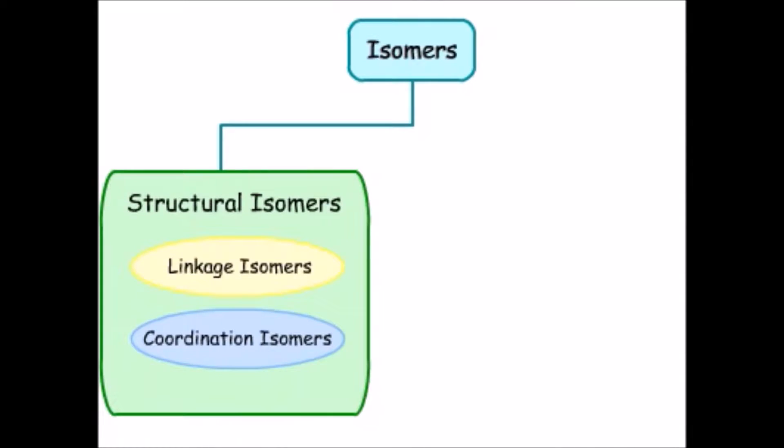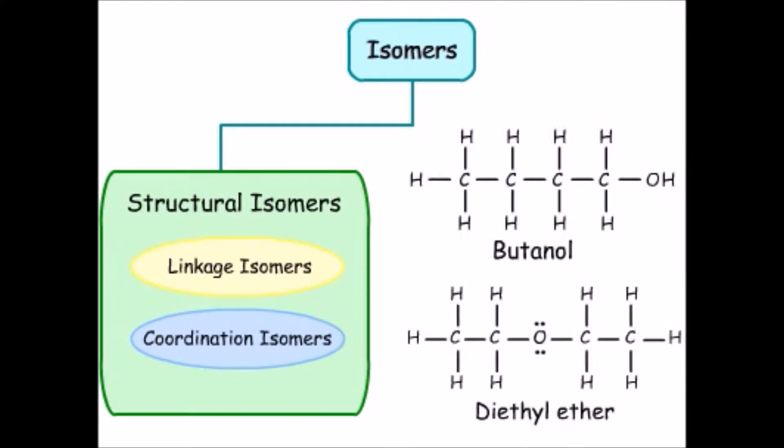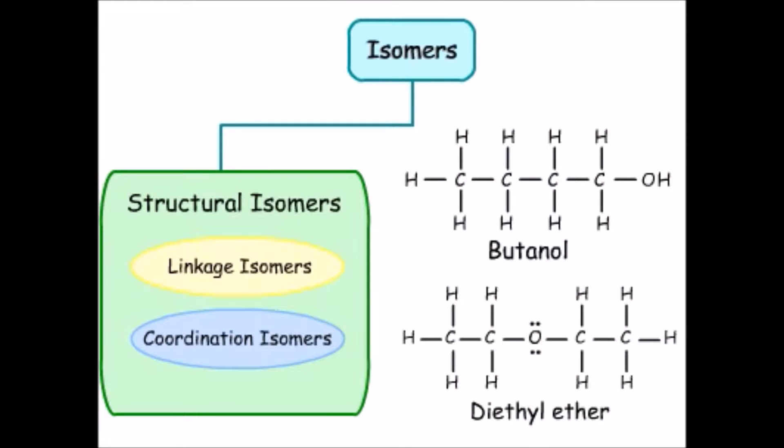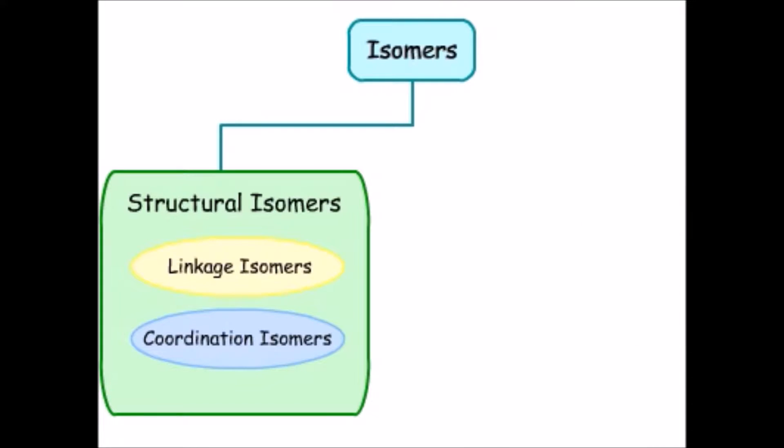Structural isomers are compounds with the same chemical formula, but different connections between bonded atoms. Butanol and diethyl ether are examples of structural isomers. There are two special groups of structural isomers.